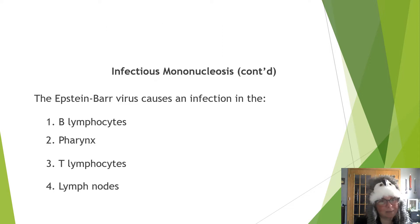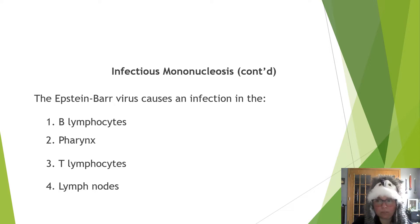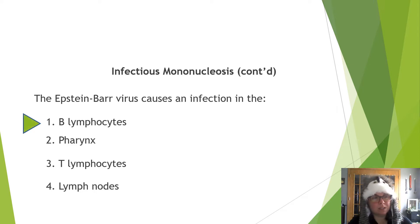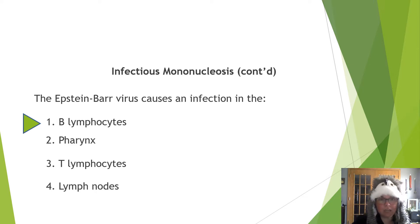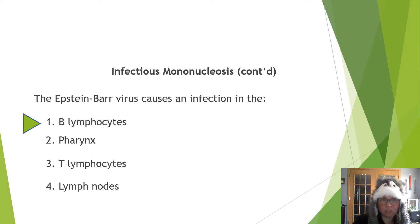Pop quiz: The Epstein-Barr virus causes an infection in the what? B lymphocytes — discussed in slide 13. There are two types of lymphocytes: T and B. B cells are the cells of concern here. Medical terminology clue: the suffix '-cyte' means cells — lymphocytes means cells. Something to help you remember.